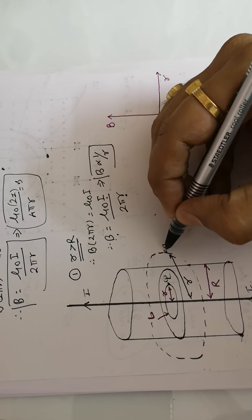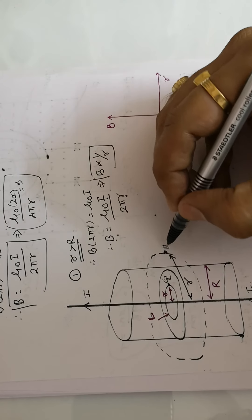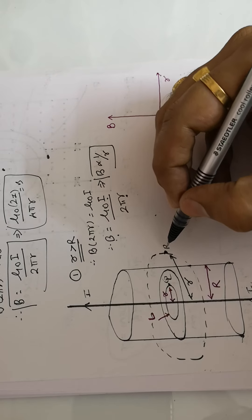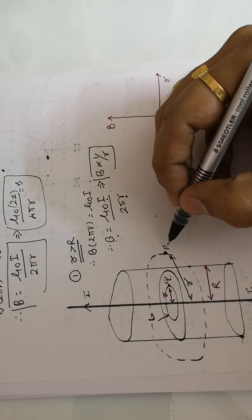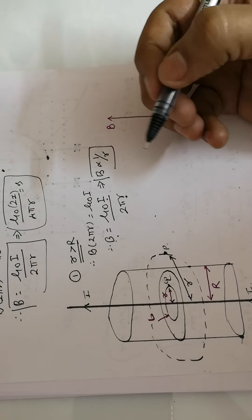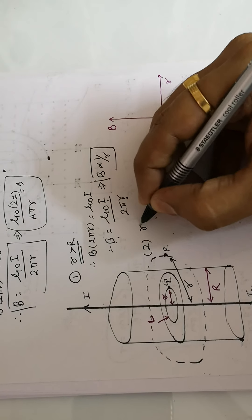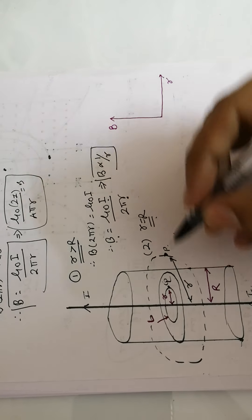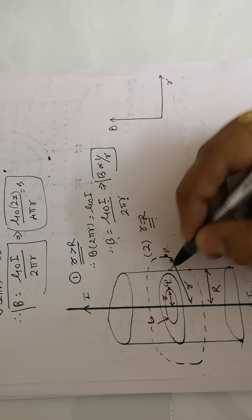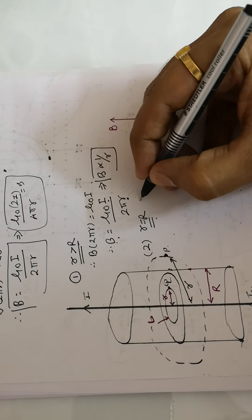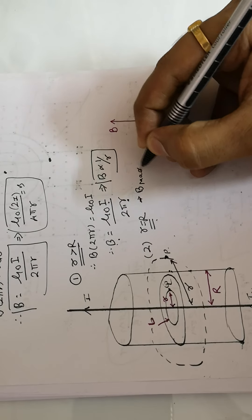We can observe that as current increases, magnetic field also increases, but as distance increases, magnetic field decreases. When small r equals capital R — that is, at the surface of the wire — the magnetic field reaches its maximum value.